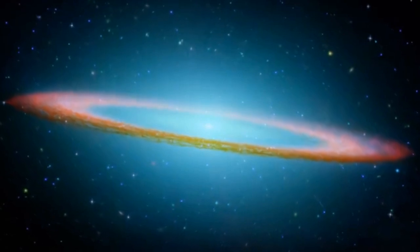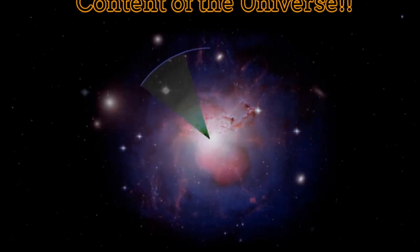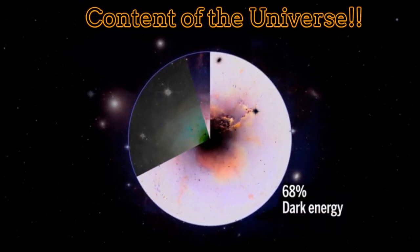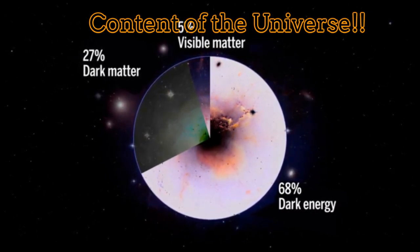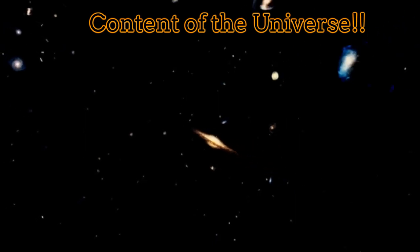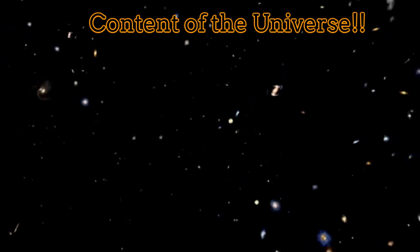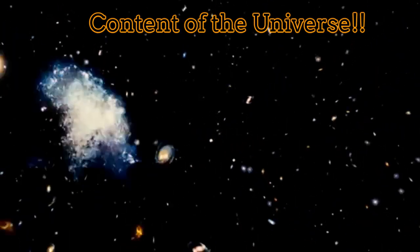The standard model of cosmology suggests that 27% of the universe should correspond to dark matter. On the other hand, 70% of the universe corresponds to dark energy, the remaining being only the matter which we know.